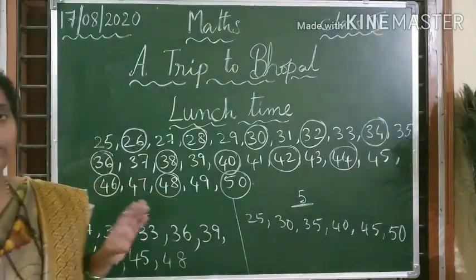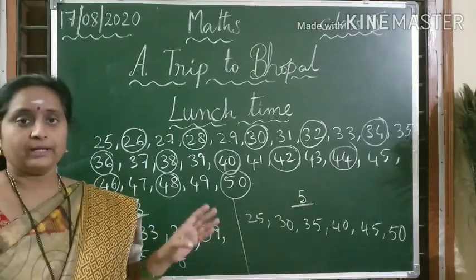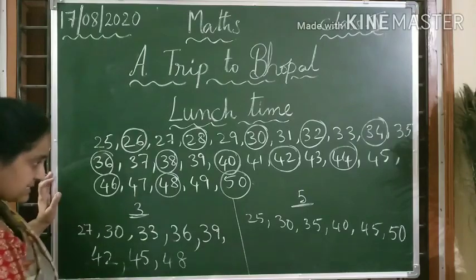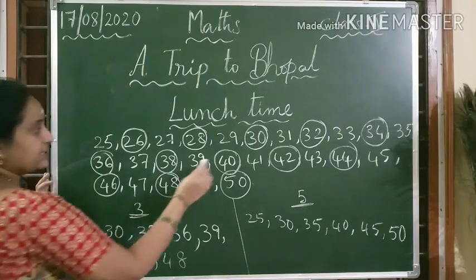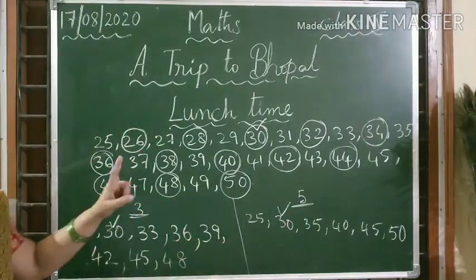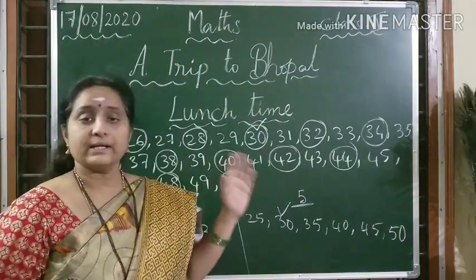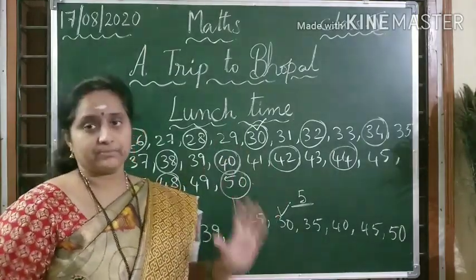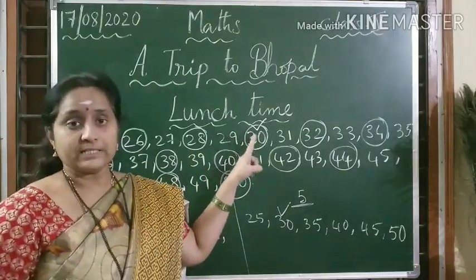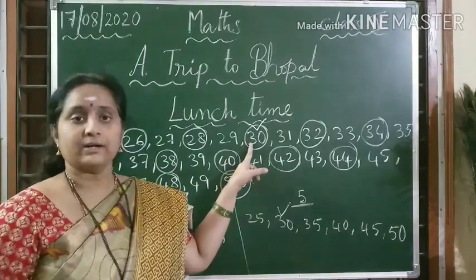Now we need to find the common number divisible by all three: 2, 3 and 5. Let us see which one is common. 30 is common in all three lists. Any other number? No — only 30 is common for the three divisors. So what is the number divisible by 2, 3 and 5? 30 is the required number.